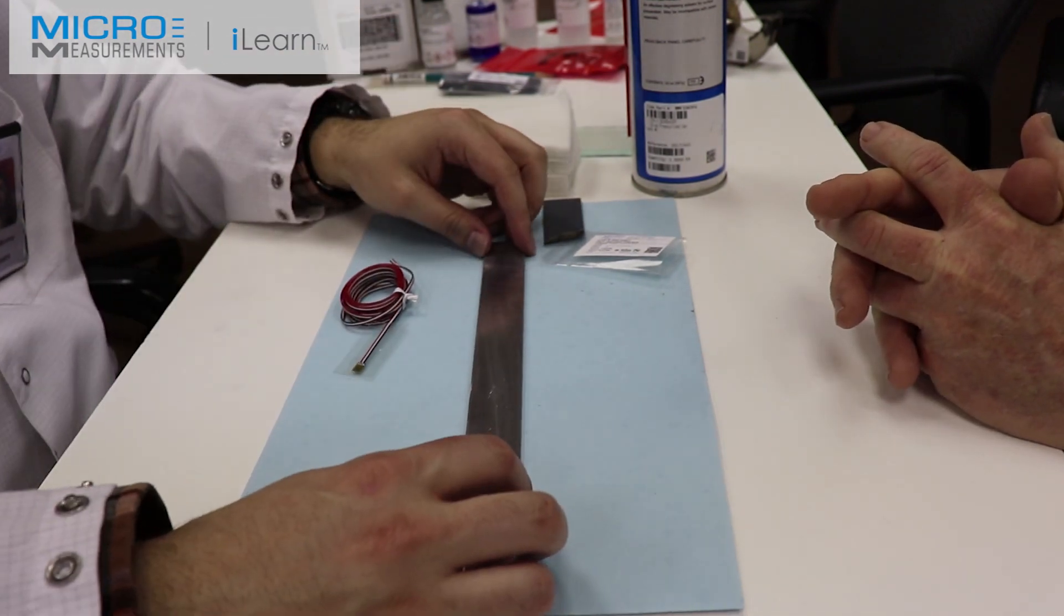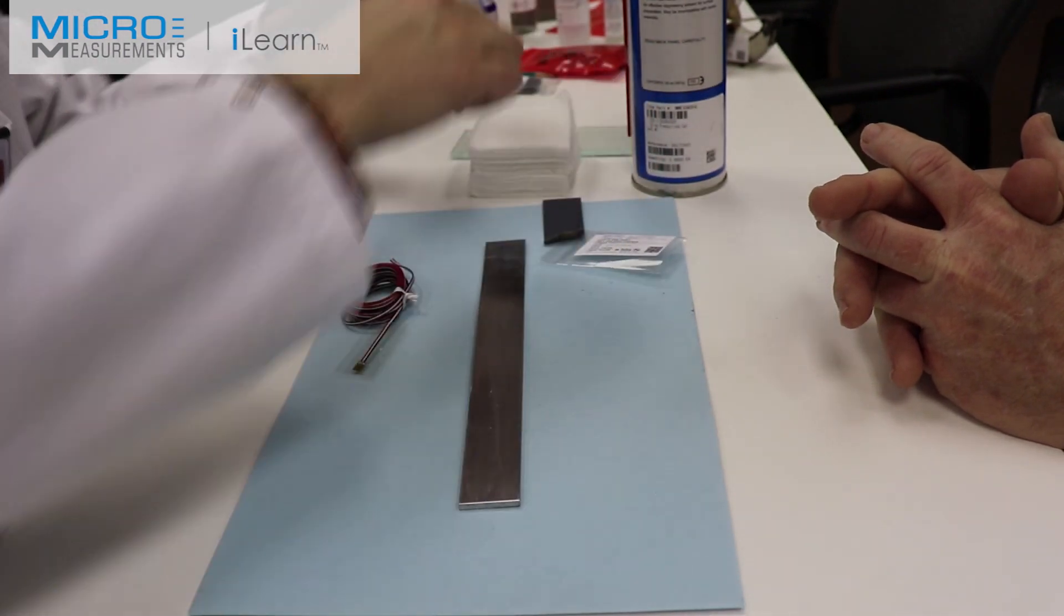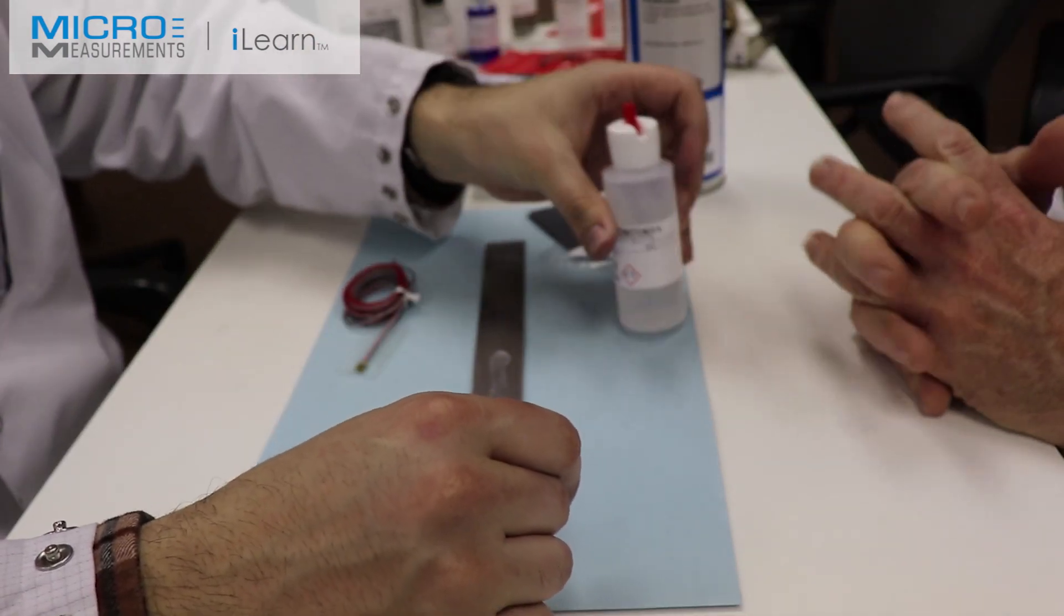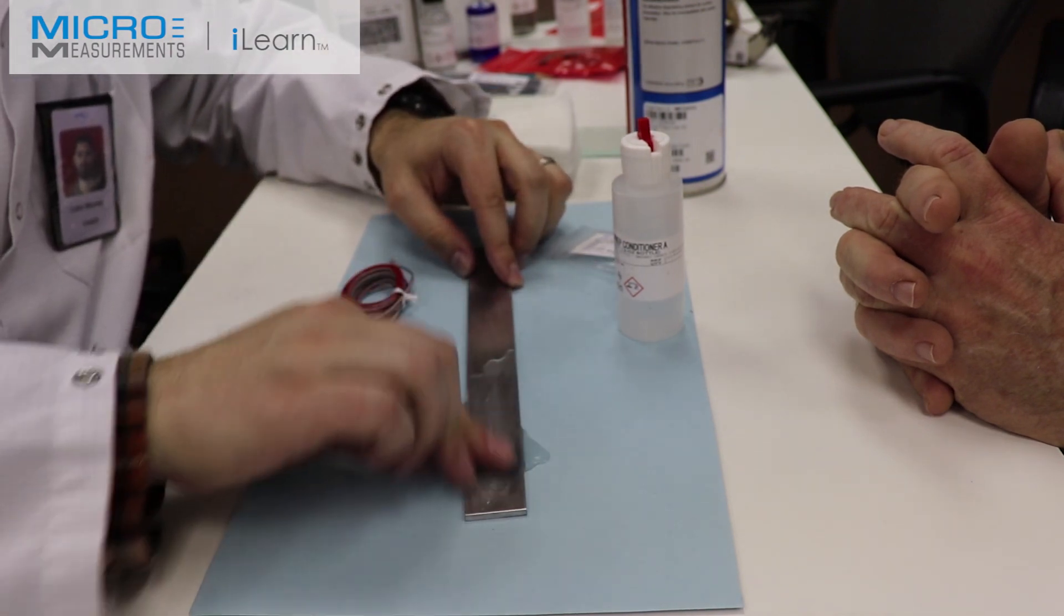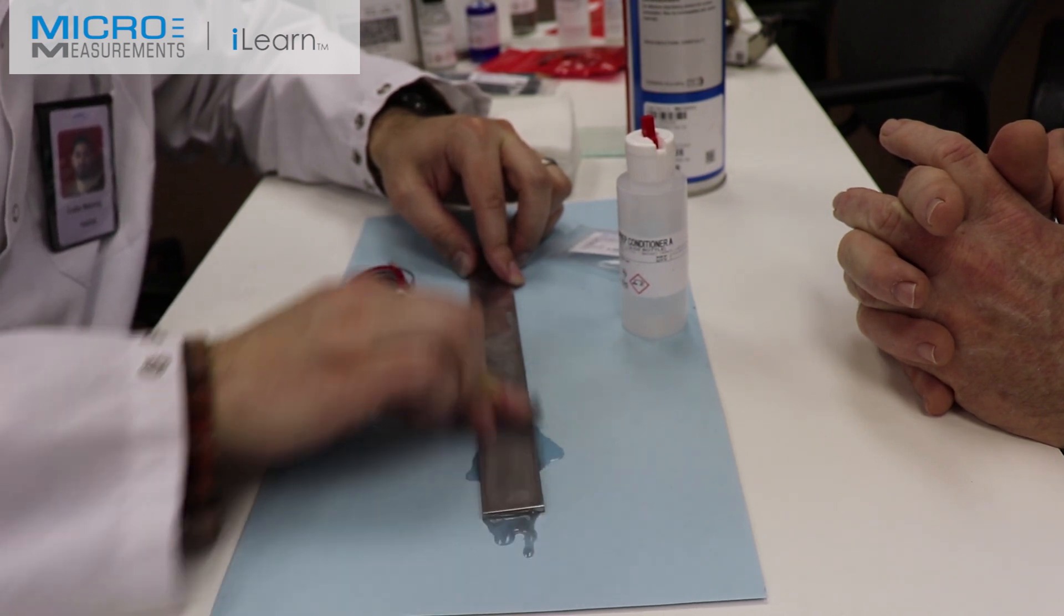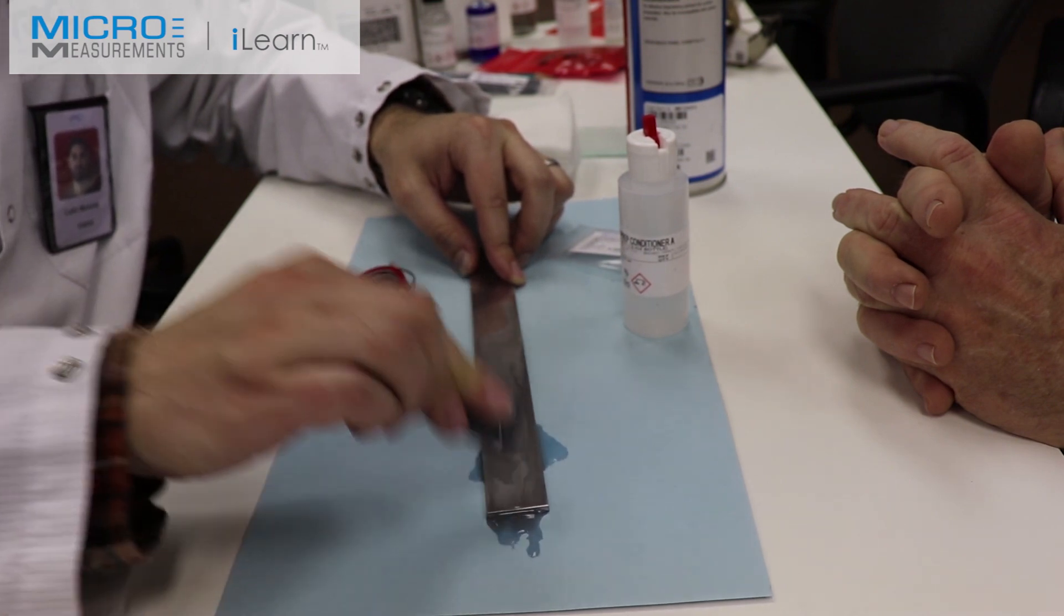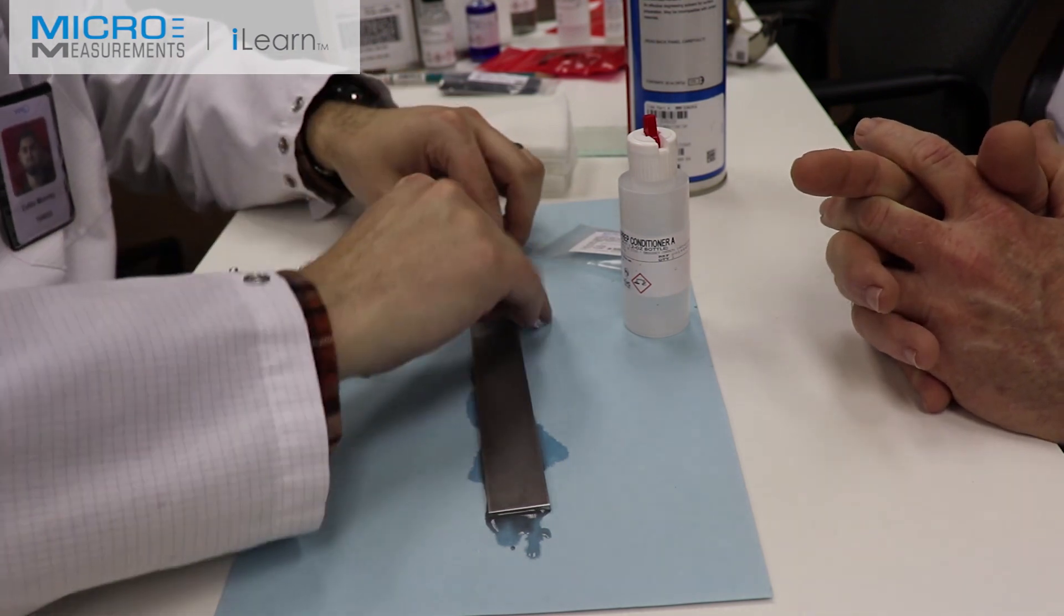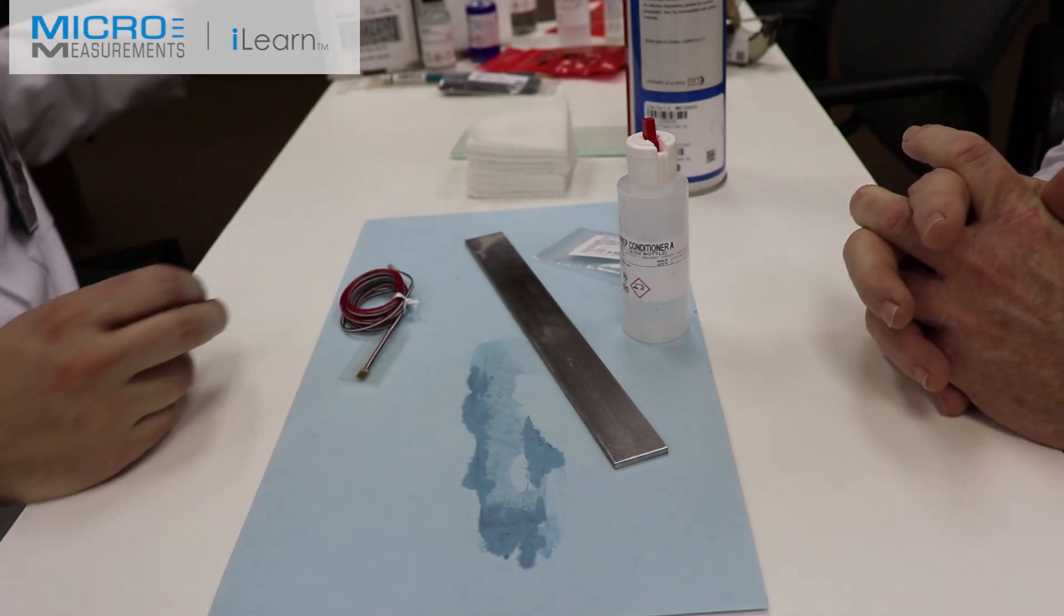He's now going to take some Conditioner A, the mild phosphoric acid solution, and another piece of the 320 grit silicon carbide abrasive paper, and he's going to wet-abrade with the Conditioner A. Then take a clean dry gauze sponge, fold it into quarters, and with a single wiping motion absorb the excess contaminated Conditioner A off the beam.